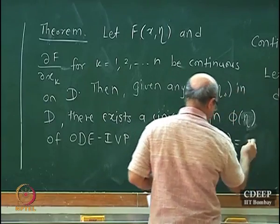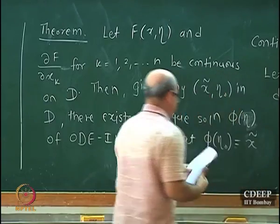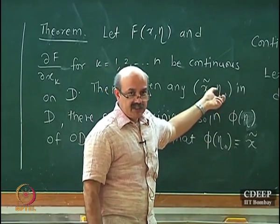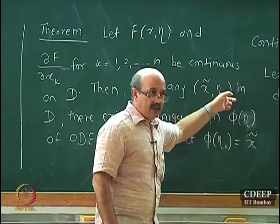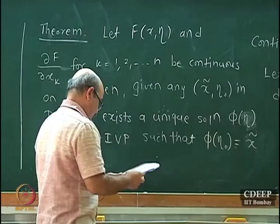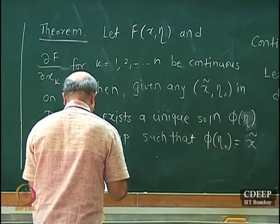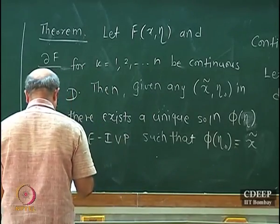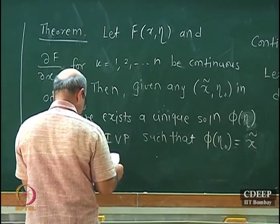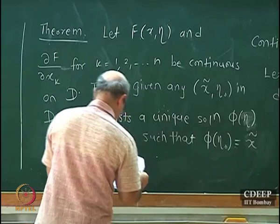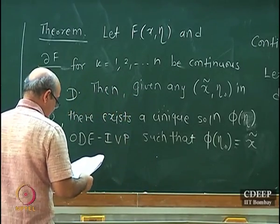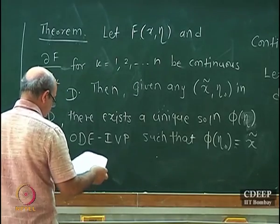Here, x̃ is the initial condition. I am starting with the initial condition and the initial value of the independent variable. The theorem also says that the solution is a continuous function of the triplet (initial condition, initial time, and time).